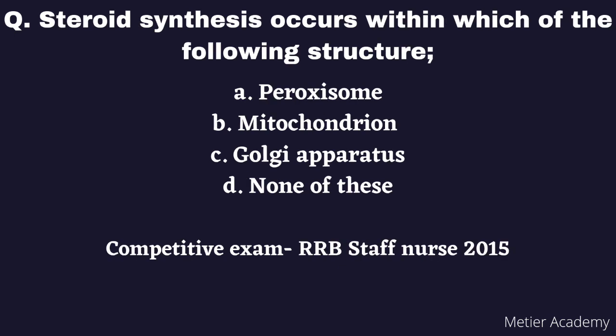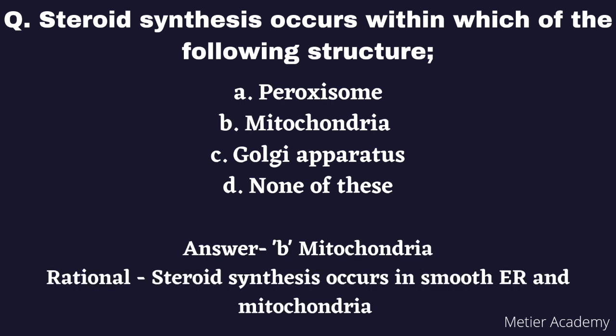The next question is: Steroid synthesis occurs within which of the following structures? Options are: A) Peroxisome, B) Mitochondria, C) Golgi apparatus, D) None of these. This question was asked in the RRB Staff Nurse exam, 2015. The correct answer is Option B, Mitochondria. The rationale is that steroid synthesis occurs in the smooth endoplasmic reticulum as well as in mitochondria.